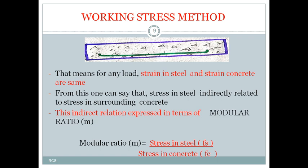From this compatibility concept, one can say there is an indirect relationship between stresses in steel and stresses in surrounding concrete. This indirect relationship between stresses in steel and stresses in surrounding concrete is expressed in terms of modular ratio. The modular ratio is represented with a small m, where m equals stress in steel (fs) divided by stress in concrete (fc).